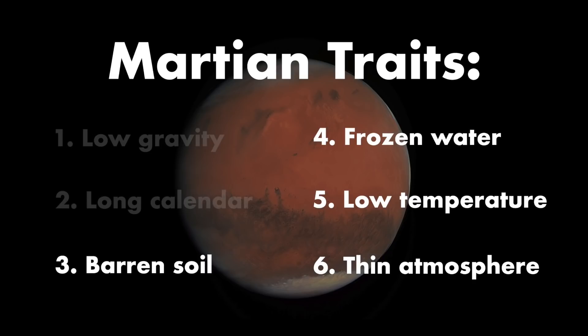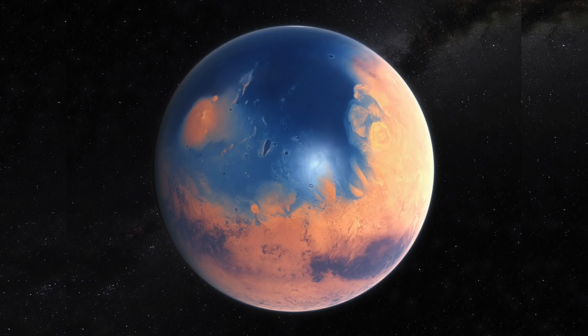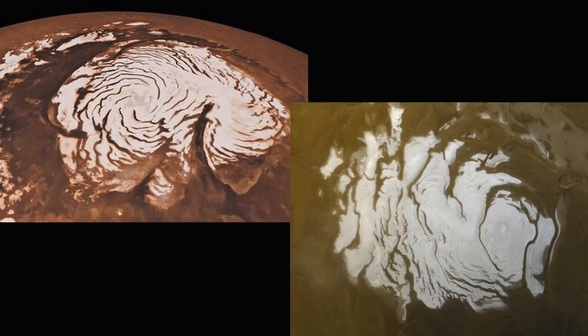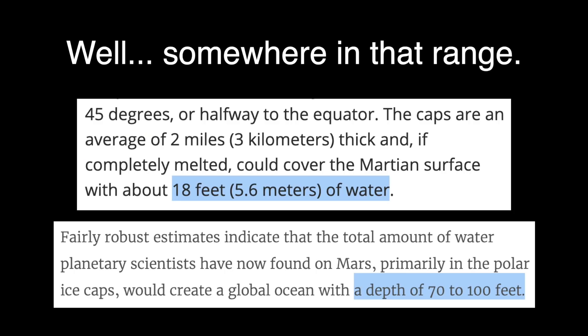Contrary to what many believe, Mars does not lack water — it actually has a great deal. Many scientists believe Mars used to be covered in an ocean. The problem is that most of the water now is frozen: Mars's northern ice cap is mostly water ice, while its southern ice cap contains frozen water trapped under a layer of frozen CO2. There is enough frozen water on Mars's surface to cover the entire planet in an ocean a hundred feet deep, and there's probably even more ice trapped under the surface.